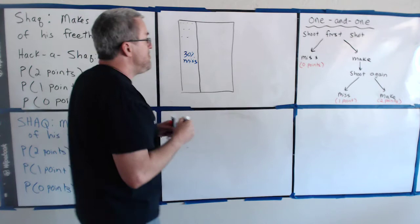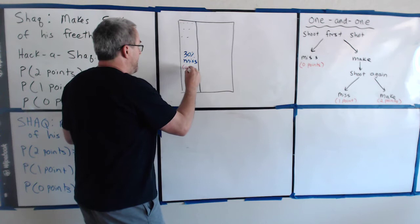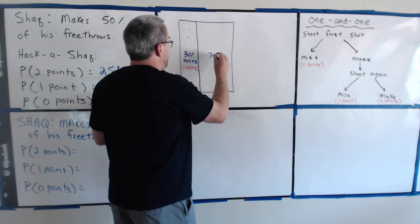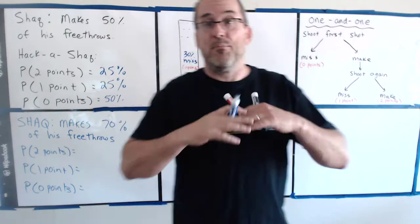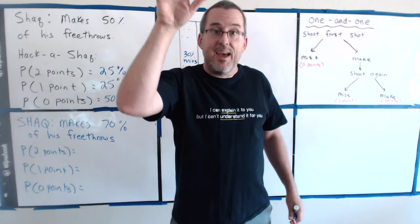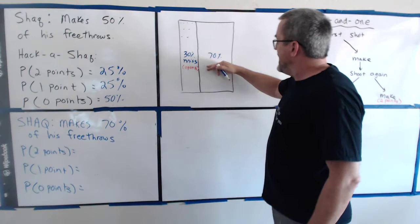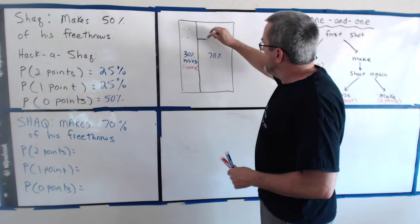You get zero points for that turn. But 70% of the time, he'll make the first shot. And then let's once again break up the 70% into 70-30 because he's going to shoot again. And we'll assume that that 70-30 ratio still persists. So inside the 70%, we'll split it up into 70-30. 30% of the time he misses and 70% of the time he makes.